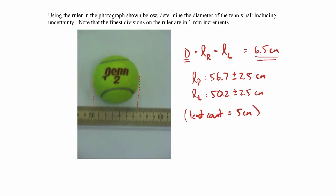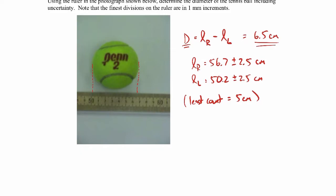To find the uncertainty, I need to do my uncertainty analysis. The diameter is L sub R minus L sub L. The absolute uncertainty in the diameter would be the square root of: the absolute uncertainty in the diameter due to the uncertainty in L sub R squared, plus the absolute uncertainty in the diameter due to the uncertainty in L sub L squared.